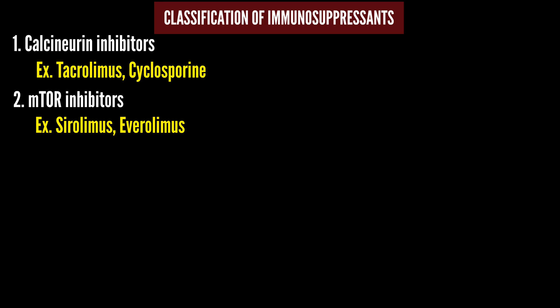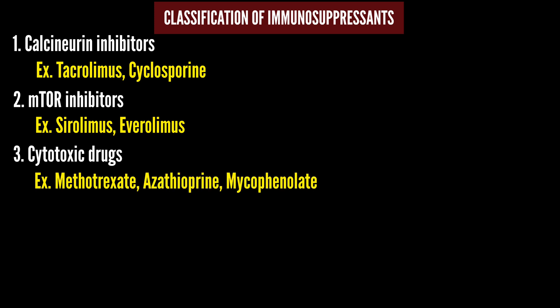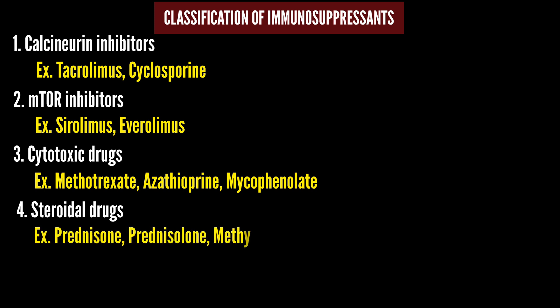In studying the pharmacology and classification of immunosuppressants, suffixes help identify mechanism. Note that Tacrolimus shares the '-limus' suffix with mTOR inhibitors but belongs to the Calcineurin Inhibitor category. The third category is Cytotoxic drugs — these are basically anti-cancer drugs that also suppress immunity. An example is Mycophenolate. The fourth category is Steroidal drugs — steroids have immunosuppressive properties. Examples include Prednisone, Prednisolone, and Methylprednisolone — all corticosteroid analogs.